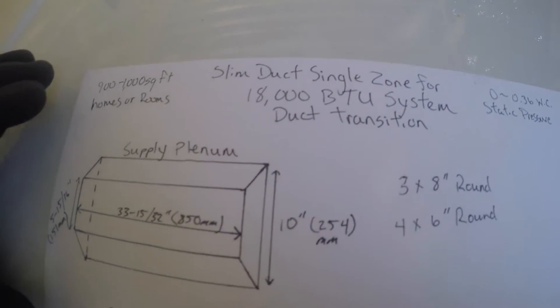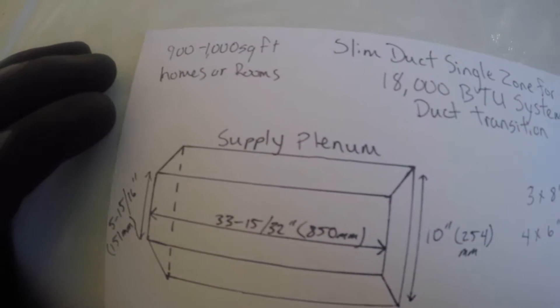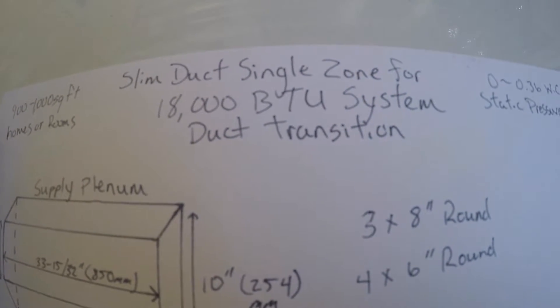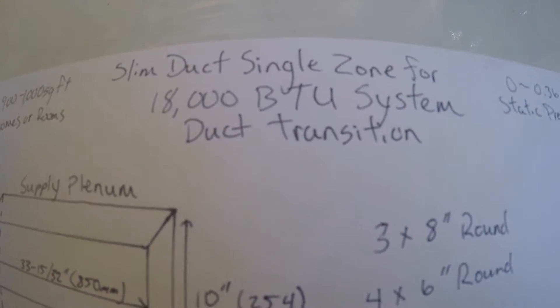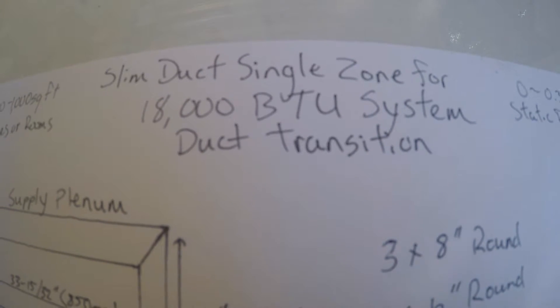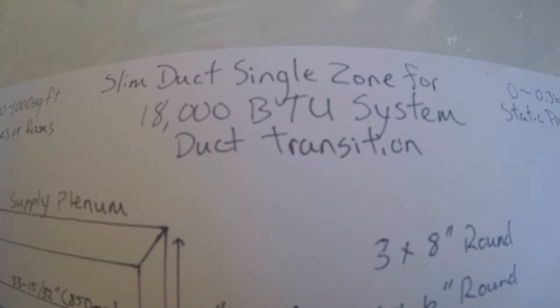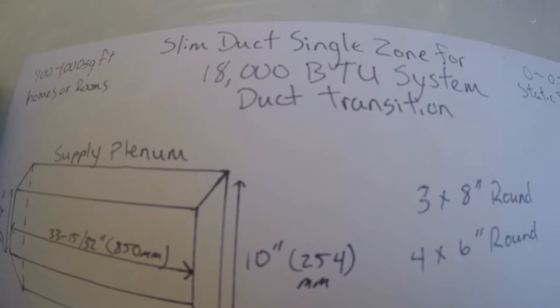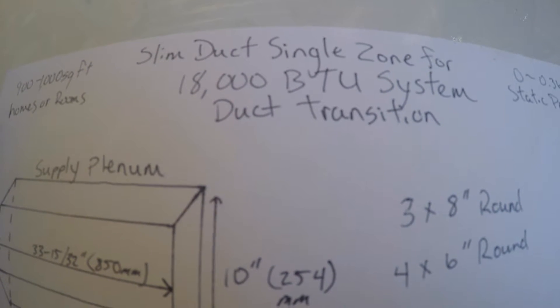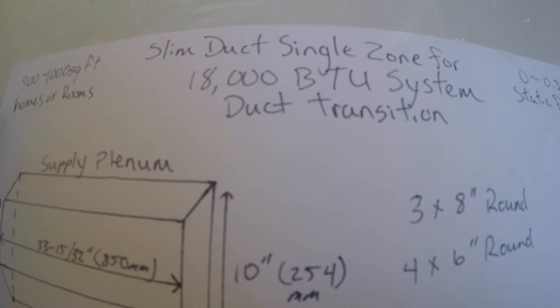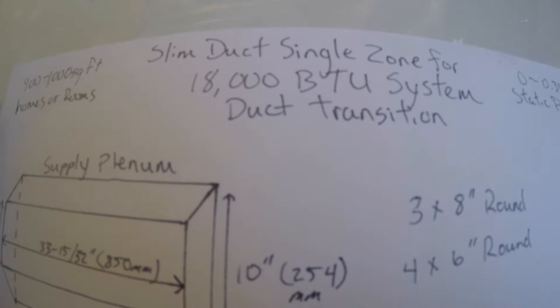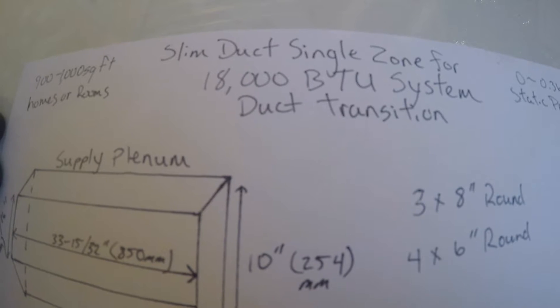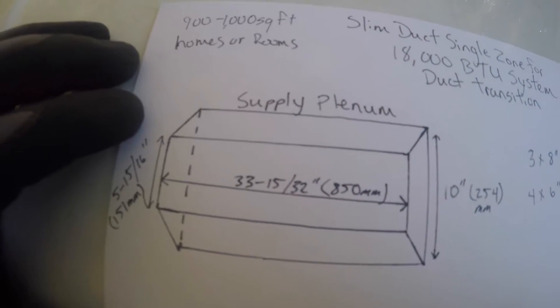Hi guys, I'm showing you information on what I use for making transitions for the slim duct single zone 18,000 BTU system. This is a transition for the ducting. They don't make these - I tried finding them online and even through Johnson supplies, basically everywhere I've looked them up.